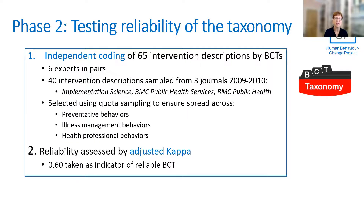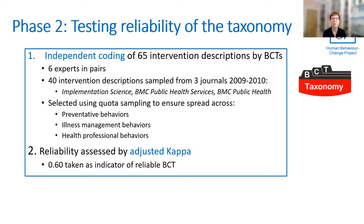For testing reliability, we had independent coding of 65 intervention descriptions by behaviour change techniques. We had six experts in pairs working with 40 intervention descriptions sampled across three journals, to get a very good range of types of excerpt covering preventative behaviours, illness management behaviours and health professional behaviours. And we used adjusted CAPA for the reliability assessment, taking 0.60 as minimum for a reliable BCT.